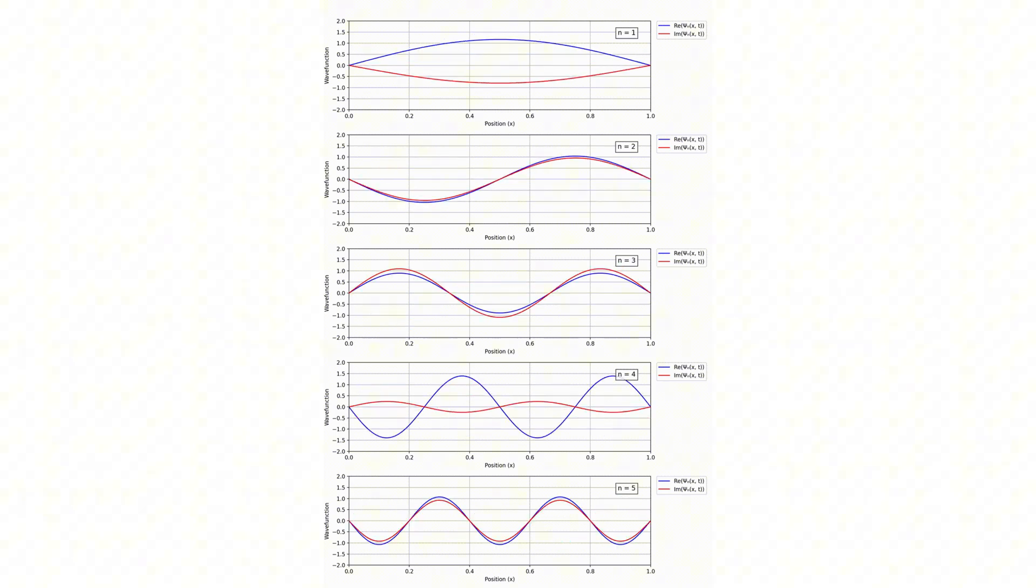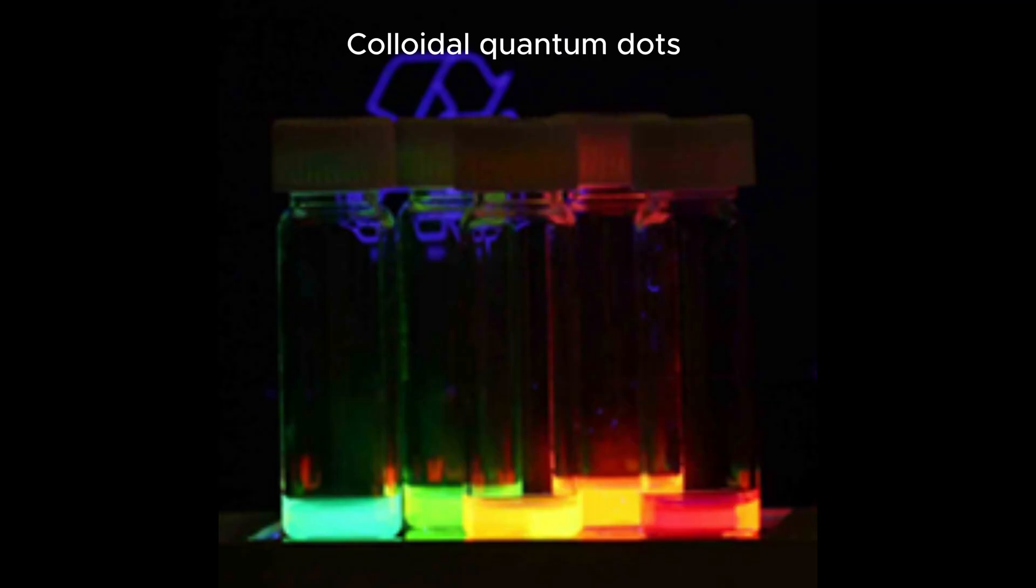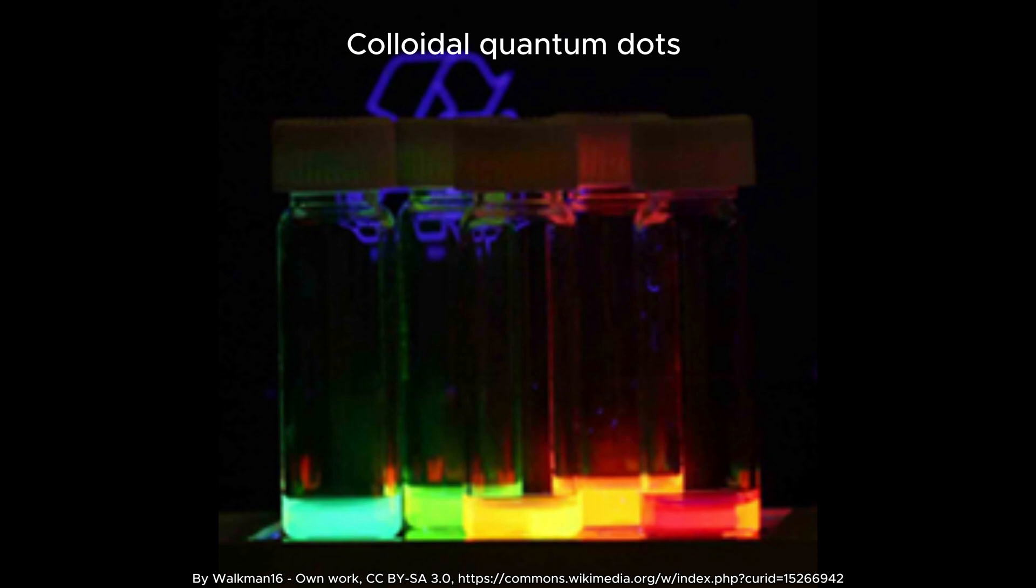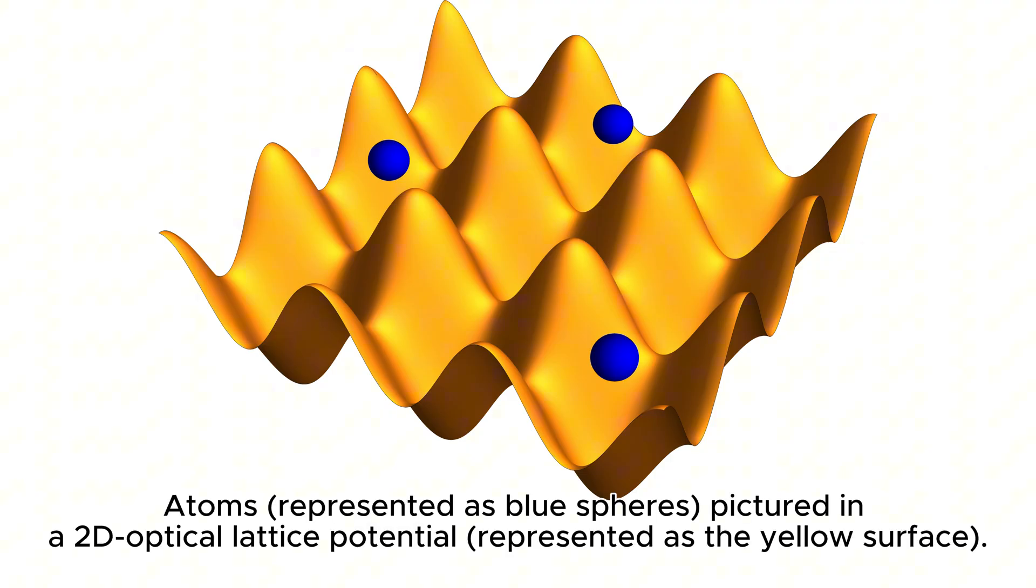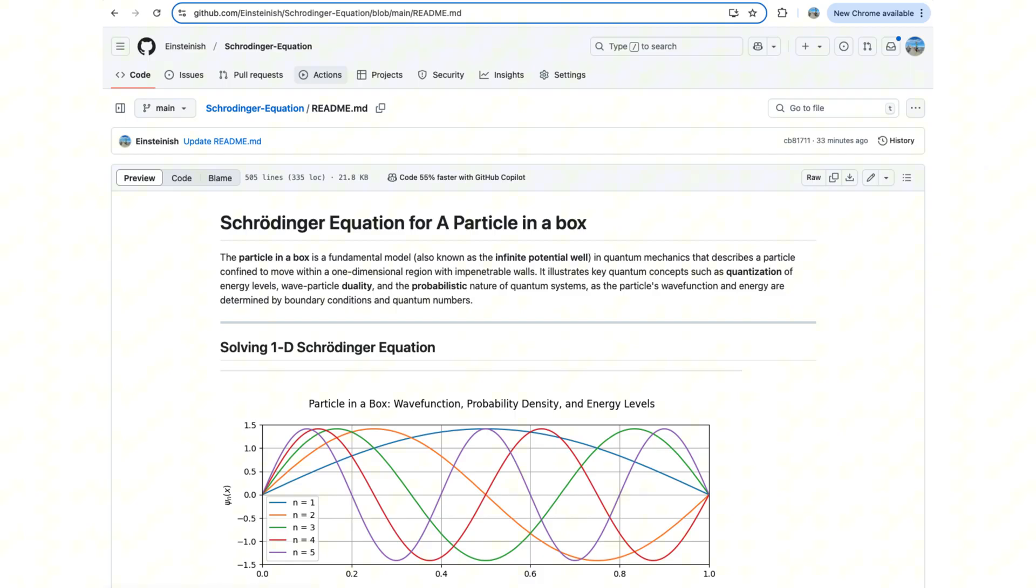Understanding confined quantum systems helps explain electrons in quantum dots, atoms in optical lattices, and potentially the next generation of quantum computers. Working through these materials should take about two to three hours, depending on your pace.